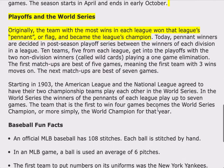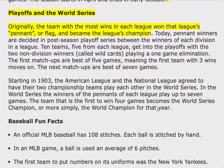Playoffs and the World Series. Originally, the team with the most wins in each league won that league's pennant, or flag, and became the league's champion. Today, pennant winners are decided in post-season playoff series between the winners of each division in a league. Ten teams, five from each league, get into the playoffs, with the two non-division winners, called wildcards, playing a one-game elimination. The first matchups are best-of-five games, meaning the first team with three wins moves on. The next matchups are best-of-seven games.